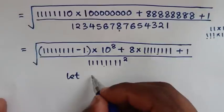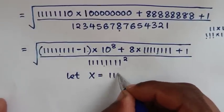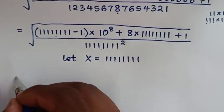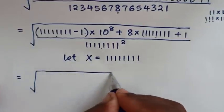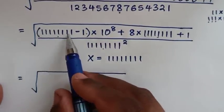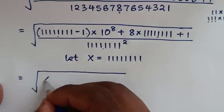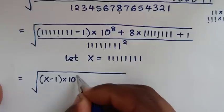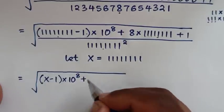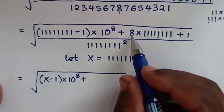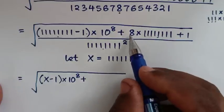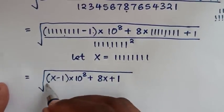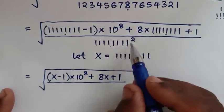Now ones-8 is common in this, this, and this. We will let x equal to 12345678. Then our equation will be equal to the square root of: (x minus 1) times 10 to the power of 8, then plus 8 times x — which is 8x — plus 1, then over x squared.